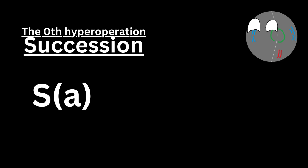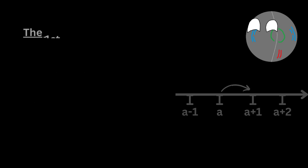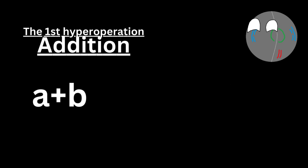Let's begin with the 0th hyperoperation, known as succession. Succession is when a number progresses to the next number on the number line — you simply add one to it. It just succeeds the previous number, so succession is pretty simple to understand.